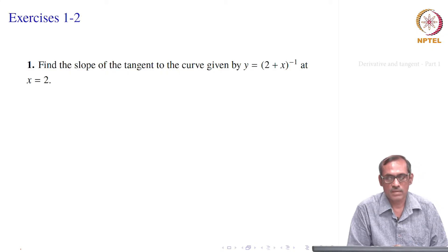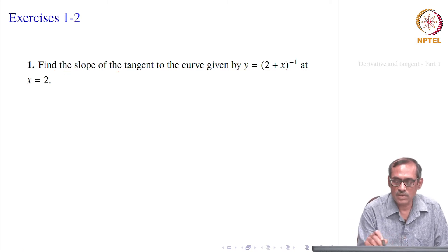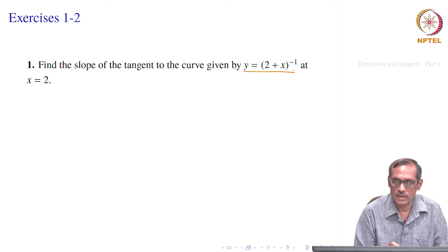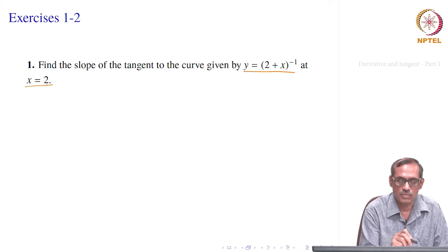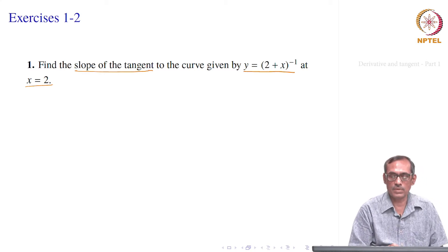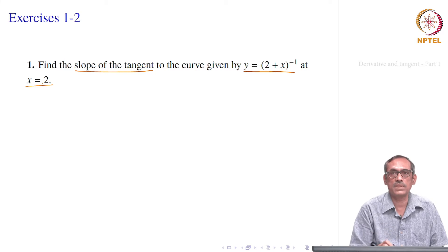Let us take some problems. Suppose I consider the function y equal to (2 plus x) to the power minus 1. We want to find whether this has a tangent at the point x equal to 2, and if so, what is the slope of this tangent? If the function is differentiable at x equal to 2, then the derivative will become the slope of the tangent.